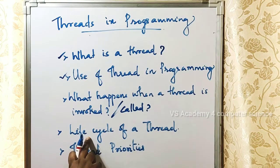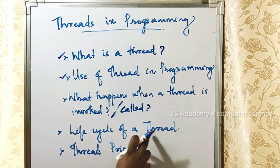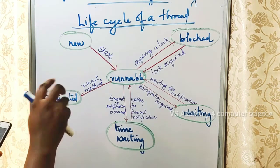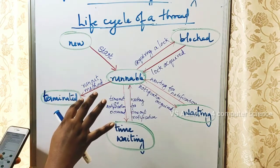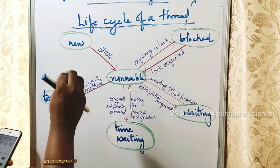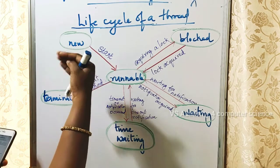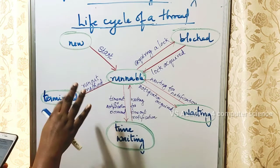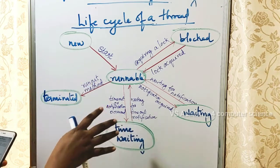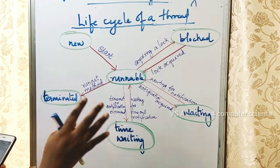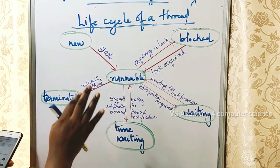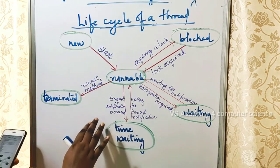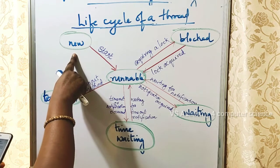Next, we will discuss the lifecycle of a thread. A thread has five or six states in its lifecycle: born, create, start, run, and terminate or die. The five stages are: new, runnable, blocked, waiting, time-waiting, and terminated.